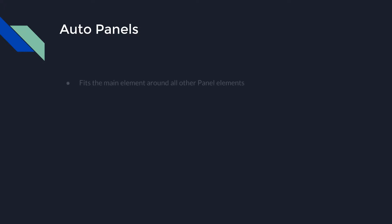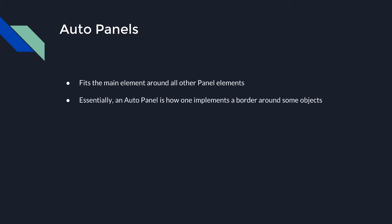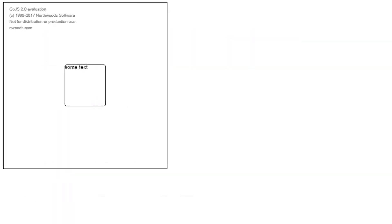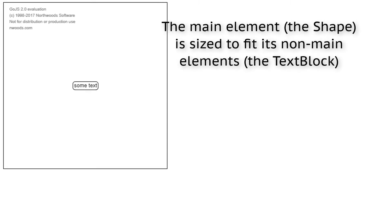Finally, we come to the Auto panel. An Auto panel fits the panel's main element around all the other elements of the panel. By default, the main element is the first element of the panel, but you can manually set an element to be the main element by setting its isPanelMain property to true. Since an Auto panel's main element needs at least one other element to measure to determine how big it needs to be, an Auto panel should have at least two elements. Using our same template and setting the panel type to Auto, the TextBlock is surrounded by the Shape — the main element is sized to fit around the non-main elements.